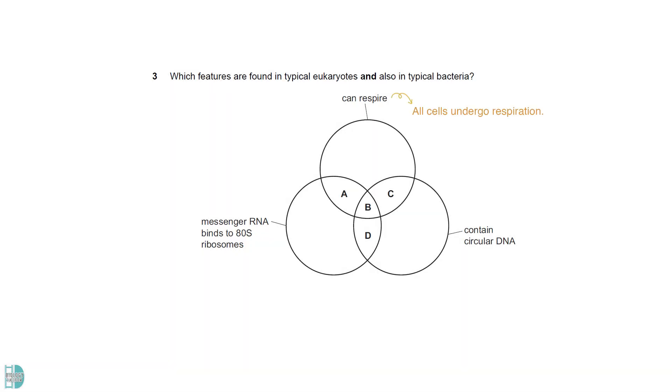All cells undergo respiration. Prokaryotic cells do not have 80S ribosomes, so this statement is wrong. Bacteria only have circular DNA. Eukaryotic cells have circular DNA in their mitochondria and chloroplasts.